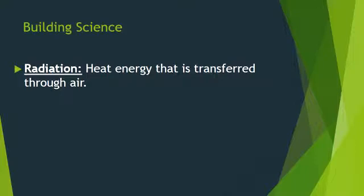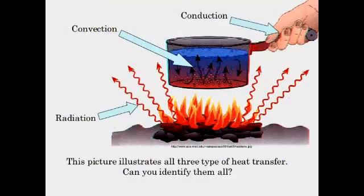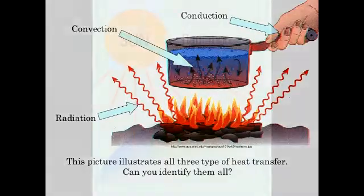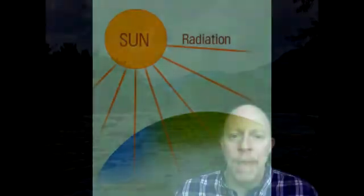Our third way of heat transfer is radiation. Radiation is heat energy that is transferred through air — not the blowing motion of convection, but just transferred through the air. The best example of this is our sun. The sun gives off radiation and it radiates heat through the air onto our skin.